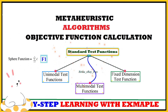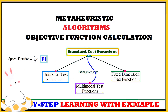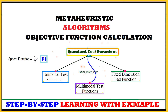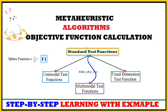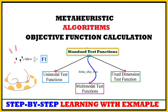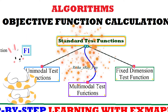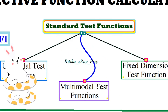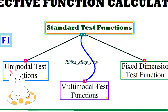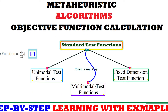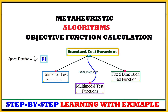This video is based on the objective function calculation. The objective function, also known as cost function, fitness function, or evaluation function, is used in metaheuristic algorithms to check algorithm performance. You can see here different types of test functions that we used in previous videos to check algorithm performance.